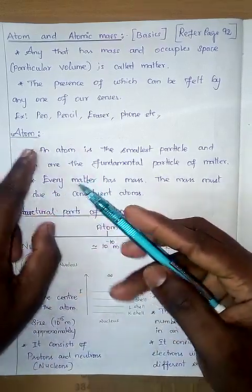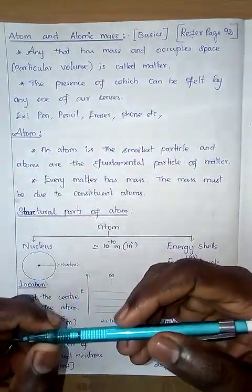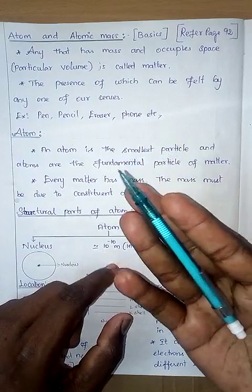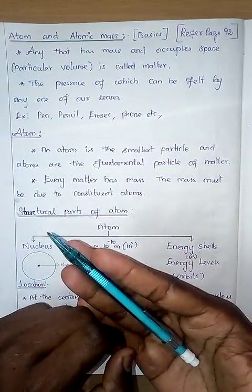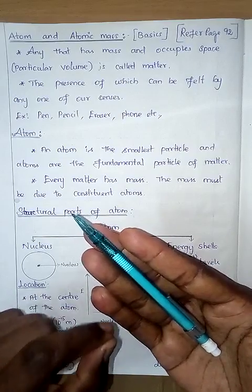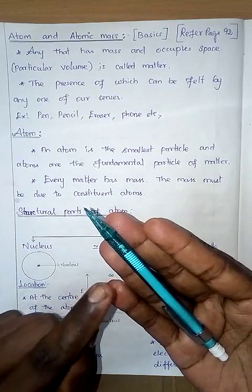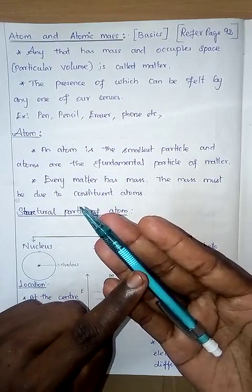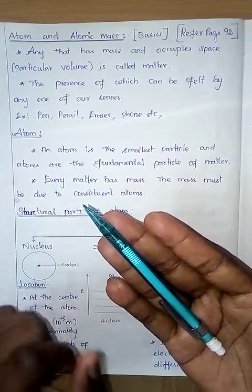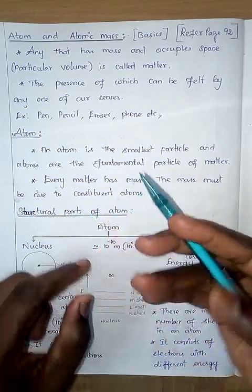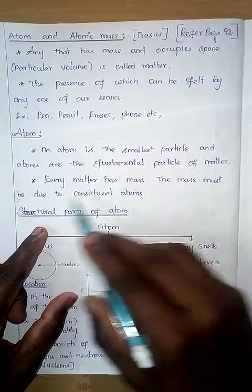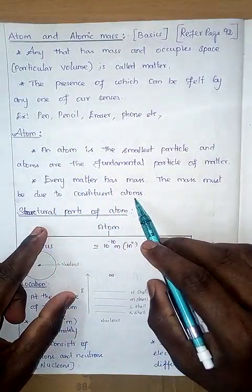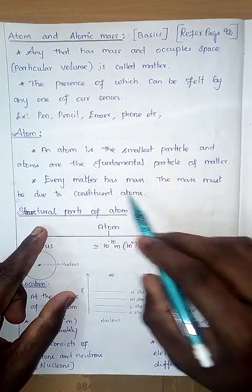Matter is made up of atoms, which are very very small — from there we got the word atom. An atom is the smallest particle, which is a fundamental particle of matter. Every matter has a mass. Where does the mass of matter come from? If the matter is made up of atoms, the mass of matter is due to the atoms present in it.